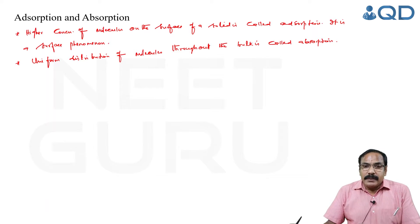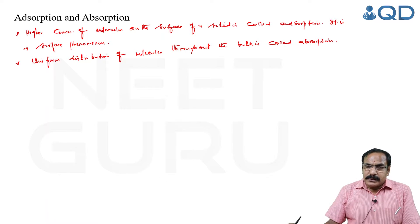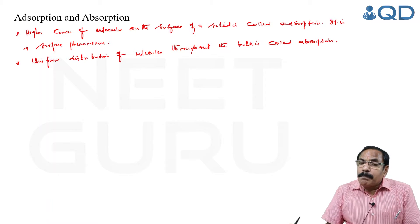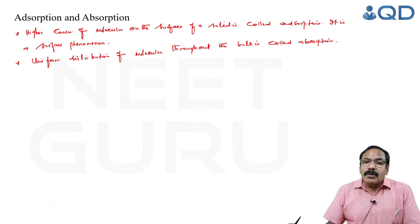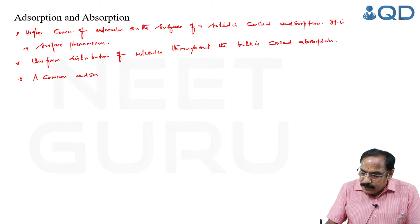Using a mask is to prevent the entry of dust particles and other pollutants into our lungs — we are depositing or preventing their entry. The common adsorbent usually used is charcoal.